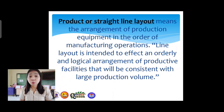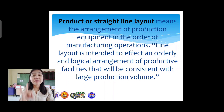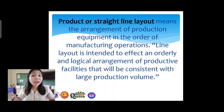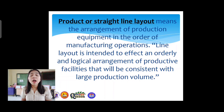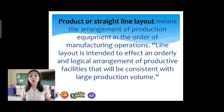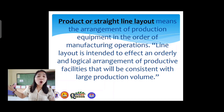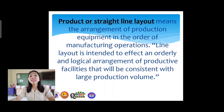Next, we have product or straight-line layout. It is the arrangement of production equipment in the order of manufacturing operations. Line layout is intended to create an orderly and logical arrangement of productive facilities consistent with large production volume, allowing manufacturers to have an effective flow of process because it's arranged according to how the operations proceed.